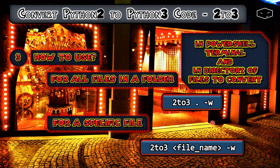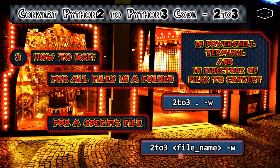If you want to convert files in another folder and the PowerShell terminal is not pointing to that folder, instead of a dot you will use the path for that folder. For a specific file, you will use the path for that folder slash the file name. Also, 2to3 has other options — minus w is not the only one.